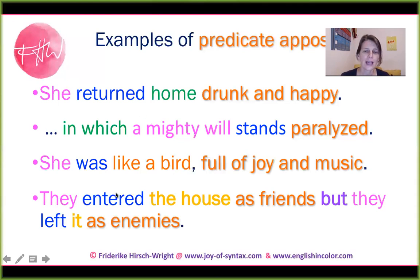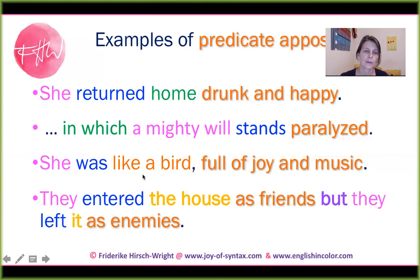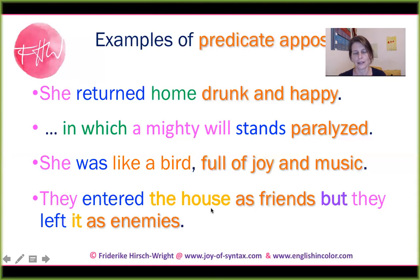'They entered the house as friends' — they were friends when they entered the house — 'but they left it as enemies.' Here we have two prepositional phrases functioning as predicative positives. These prepositional phrases don't modify the verb; they speak to the subject. They say something about the subject as they entered the house and left it.